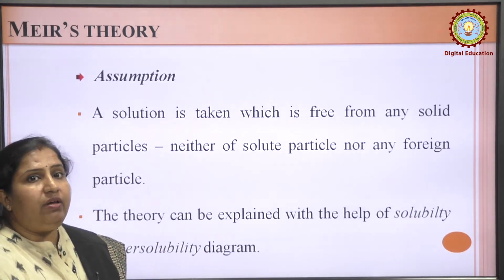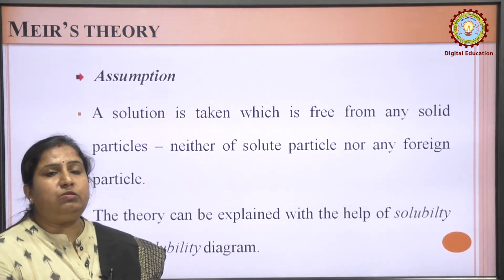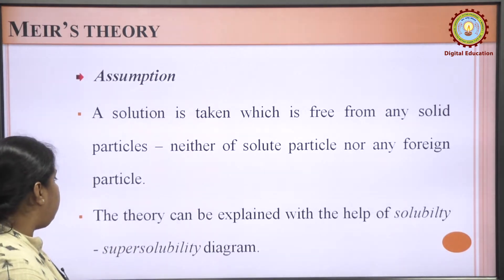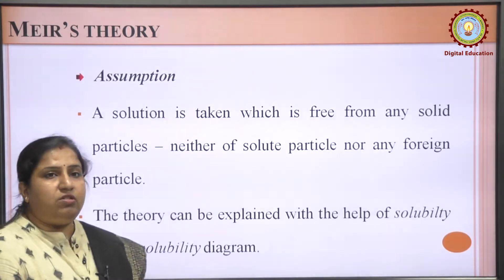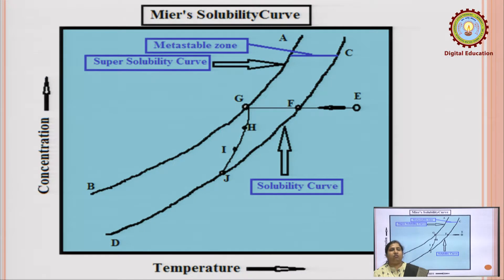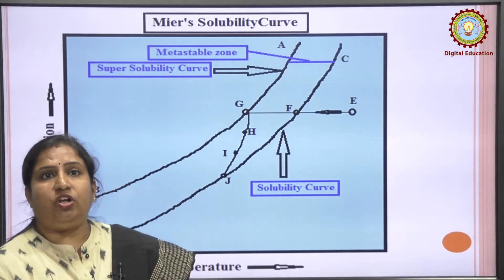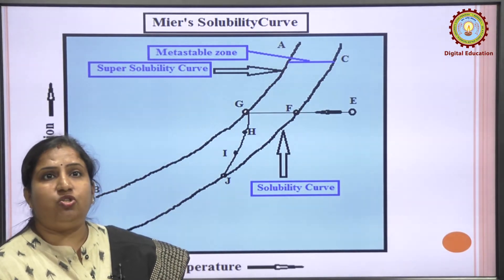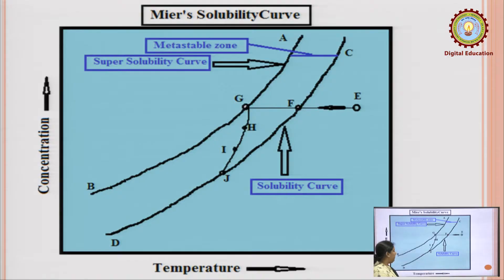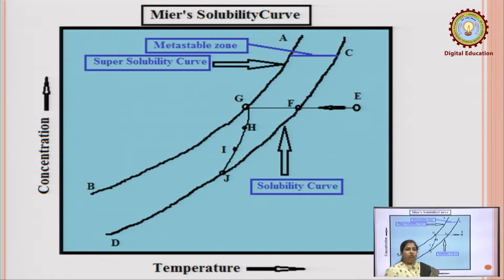This theory is basically explained with the help of a solubility and super-solubility diagram. Mears theory can be explained with a diagram — Mears super-solubility curve — which gives the relationship between concentration and temperature.